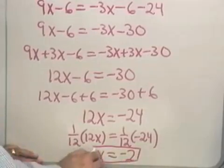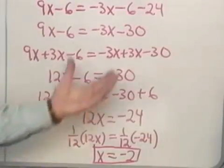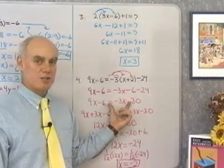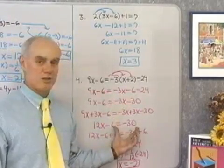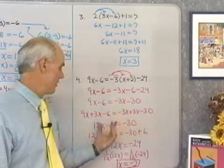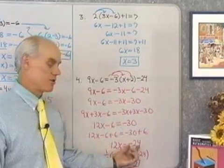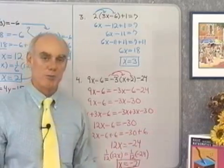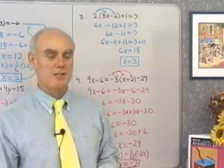So negative 2 is my solution. It took 3 steps to simplify both sides, then 2 applications of the addition property to separate variable and constant terms, and finally the multiplication property to isolate x.